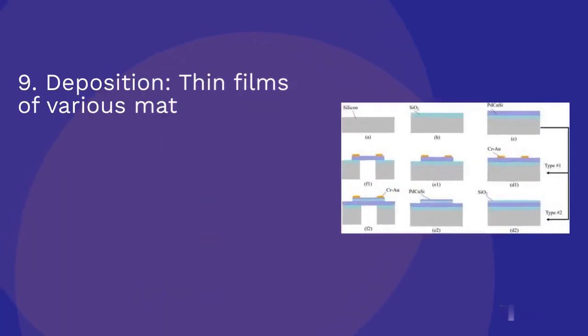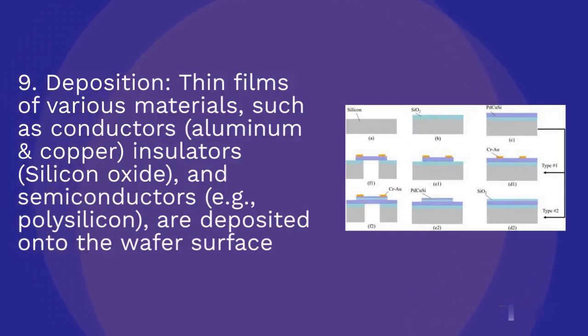Deposition: Thin films of various materials, such as conductors like aluminum and copper, insulators like silicon oxide, and semiconductors, for example polysilicon, are deposited onto the wafer surface.